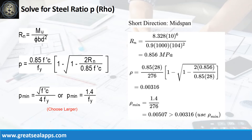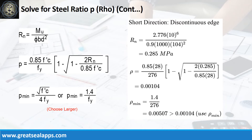And D equals 104 mm. The beam design ratio RN equals 0.856 MPa. Reinforcement ratio rho equals 0.00316. Use rho minimum of 0.00507.